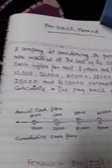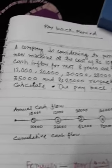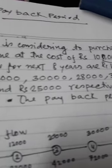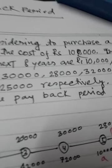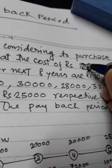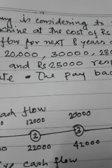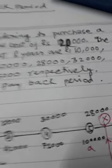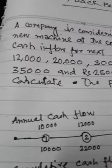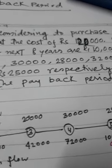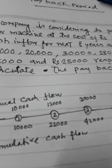Now consider this problem. A company is considering purchasing a new machine at the cost of rupees 1,20,000. The cash inflow for the next 8 years — meaning the project is for 8 years — are: 10,000; 12,000; 20,000; 30,000; 28,000; 32,000; 35,000; and 25,000 respectively. This is the cash inflow for 8 years. Now we have to calculate the payback period.